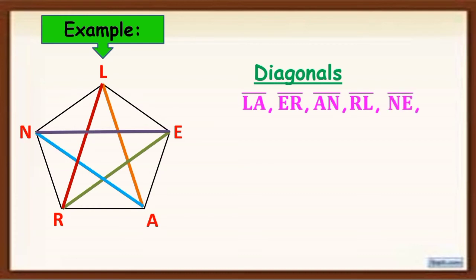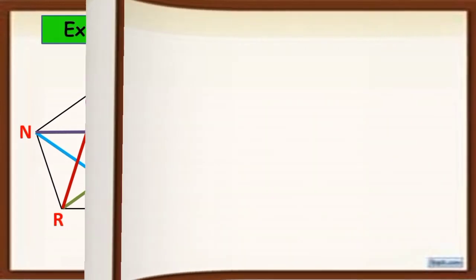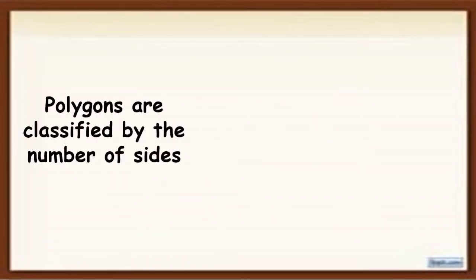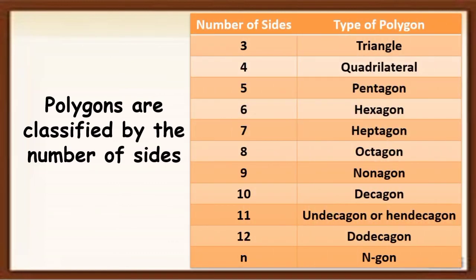Remember that polygons are classified by the number of sides. So, these are the type of polygons according to the number of sides. If the given polygon has three sides, that is what we call triangle. Four sides is quadrilateral, five sides is pentagon, six sides is hexagon, seven sides is heptagon.